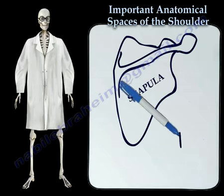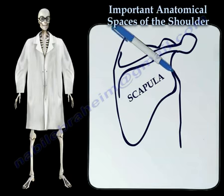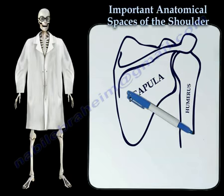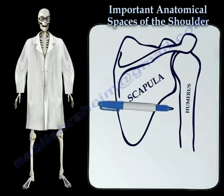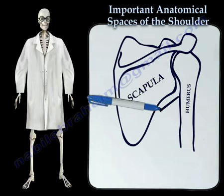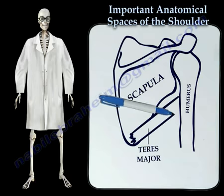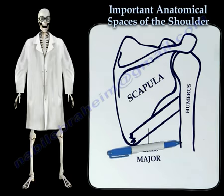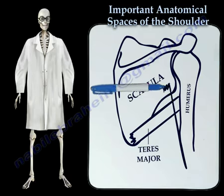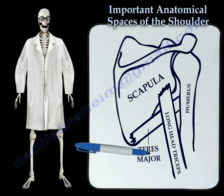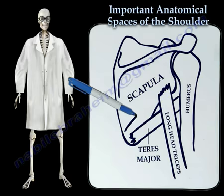Let's draw out the humerus. There are three muscles that make up these important anatomical spaces. These muscles include the teres major, the long head of the triceps, and the teres minor.